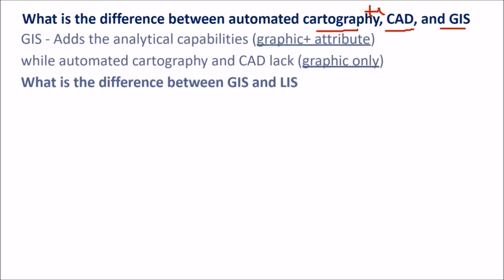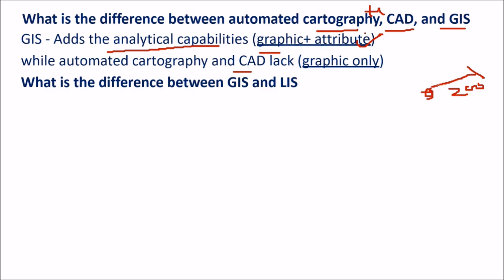What is the difference between these three? GIS adds analytical capabilities — you have graphic means, you can view with various attributes. Cartography and CAD lack all these analytical capabilities. In automated cartography and CAD, you cannot tell that at this point, from 200 meters distance, how many ATMs are there, or if an accident has happened, what medical facilities are available within 100 meters. Hydrological flow analysis and network creation — all these can only be done in GIS.